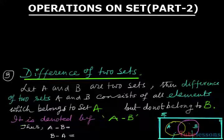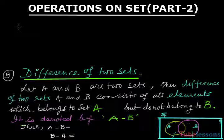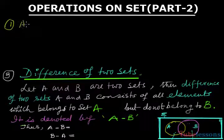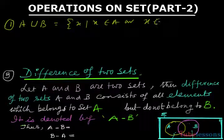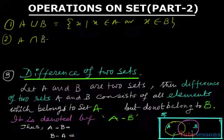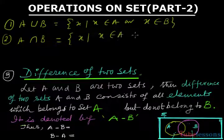Hello viewers, welcome. In this session we are discussing operations on sets part 2. In part 1, we discussed A union B, defined as all elements x such that x belongs to A or x belongs to B, and A intersection B, defined as x such that x belongs to A and x belongs to B.